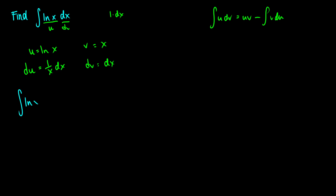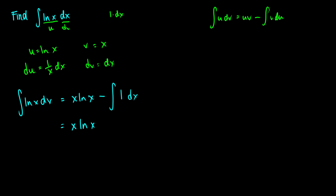Now we rewrite the integral: ∫ln(x) dx = x·ln(x) − ∫x·(1/x) dx. We don't need to differentiate or integrate x·ln(x), it's fine as is. The x and 1/x cancel in the remaining integral, leaving ∫1 dx. So the result is x·ln(x) − x + C, which we can factor as x·(ln(x) − 1) + C. You can verify this by applying the product rule and confirming you get ln(x).